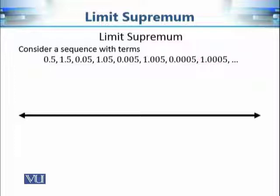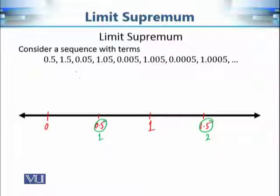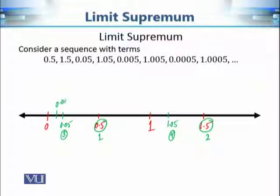We can observe the pattern for deciding the next terms of the sequence. It starts from 0.5, then goes to 1.5, then to 0.05 — close to the origin — then to 1.05, close to 1. The fifth term is 0.005 and the sixth term is 1.005. The terms of the sequence are oscillating between points near the origin and points near 1.